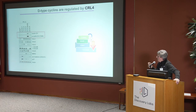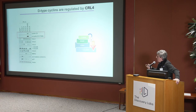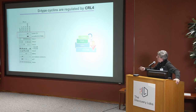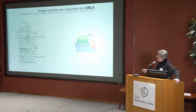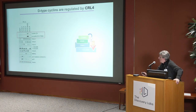Before we understood which one, we asked: if it's not Cul1, which cullin is involved? We down-regulated by siRNA all cullins individually. We saw no effect with Cul1, no effect with any other cullin. Only when we down-regulate Cul4 do we see accumulation of cyclin D1 as well as the phosphorylated form of cyclin D1.